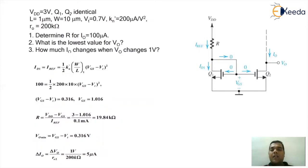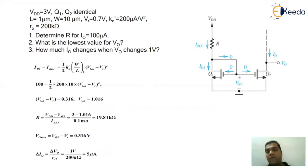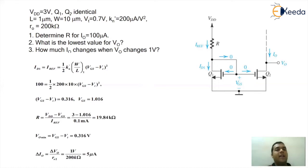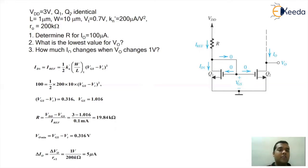Now let's take a numerical problem based on the MOSFET current mirror circuitry. Two MOSFETs Q1 and Q2 with a VDD battery connected to R. The drain of Q1 is connected to the gate and both gates are equipotential; both sources are also equipotential. Given: VDD = 3V, both MOSFETs Q1 and Q2 are identical, L = 1 µm, W = 10 µm, threshold voltage VT = 0.7V, KN' (µCox) = 200 µA/V², and output resistance RO = 200 kΩ.